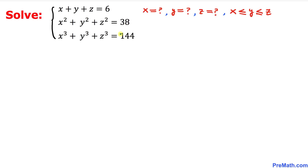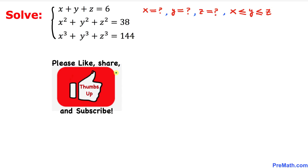Welcome to Pre-Math. In this video tutorial we have a system of three equations with three variables. Our equations are x plus y plus z equal to 6, x squared plus y squared plus z squared equals 38, and x cubed plus y cubed plus z cubed equals 144. We are going to find the values of x, y, and z, where x must be less than or equal to y and y must be less than or equal to z.